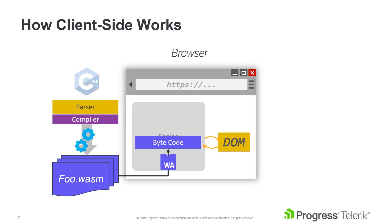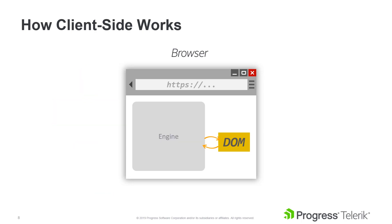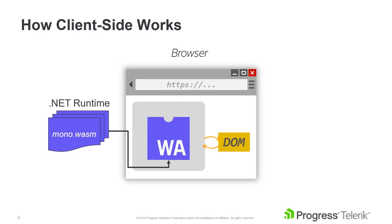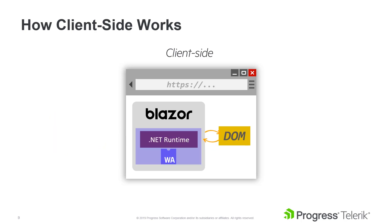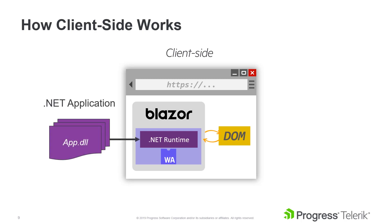Languages other than JavaScript, such as C++, can be compiled directly to WebAssembly bytecode. Microsoft has taken the .NET runtime and compiled it to WebAssembly, making it possible to run .NET code directly in the browser. This is how Blazor enables developers to write .NET code in a client-side web application. Because the .NET runtime is available on the client, we can utilize virtually any .NET standard library.